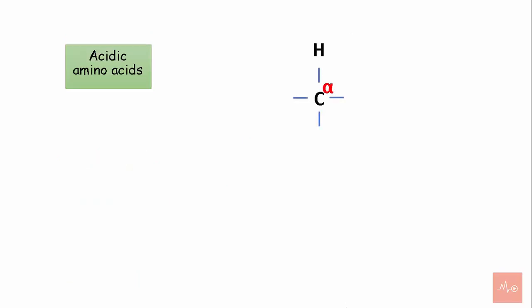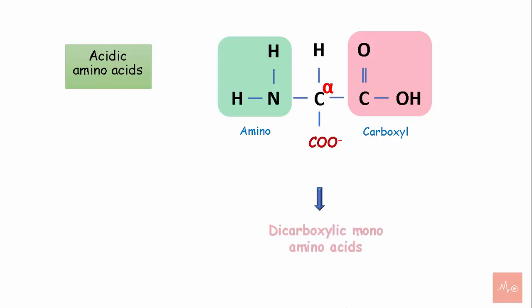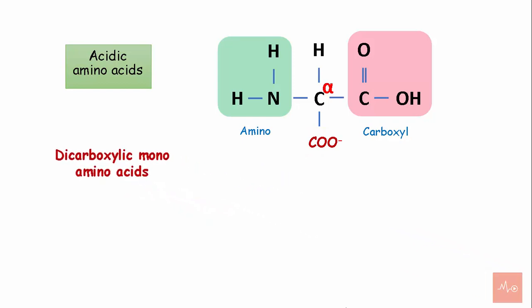Acidic amino acids contain a carbon skeleton, one amino group, and two carboxyl groups, also called dicarboxylic monoamino acids. The side chain contains an additional carboxyl group, which makes it dicarboxylic and acidic. Examples of these amino acids are aspartic acid and glutamic acid.